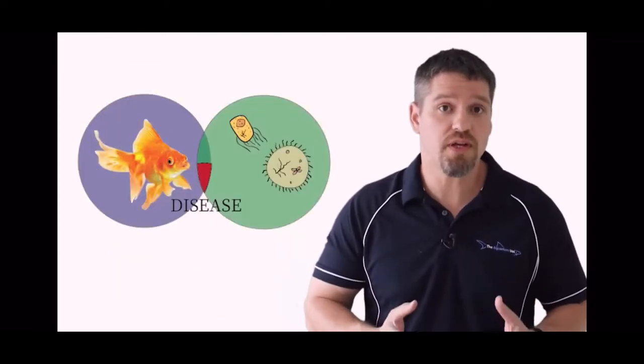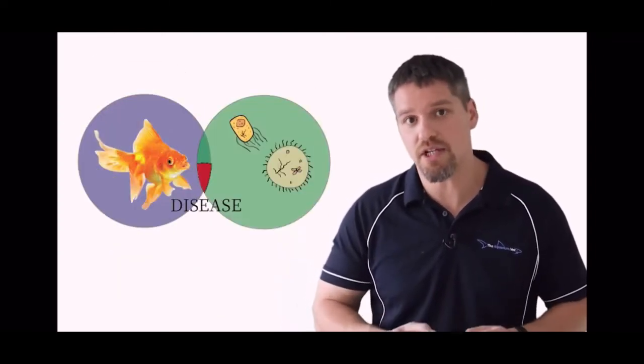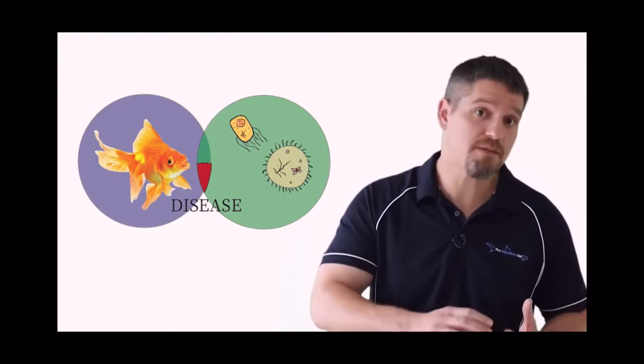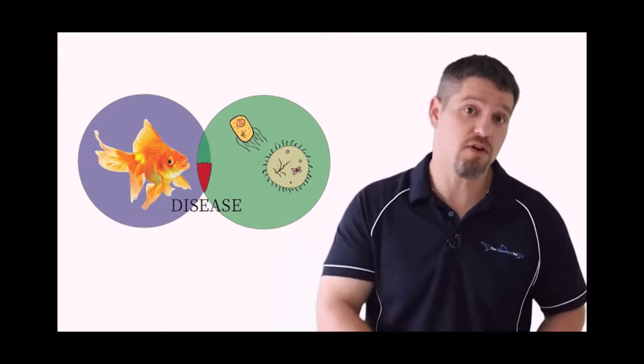The next circle which plays a role in disease is the pathogen, and the main pathogen groups that affect our fish include parasites, bacteria, viruses, and fungal infections.